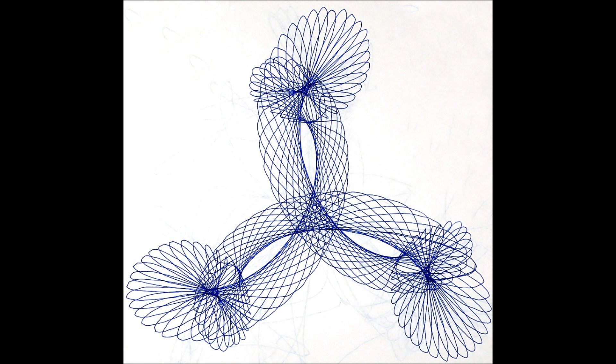The number of lobes a figure has is determined by dividing the number of teeth in the main gear by the largest common factor shared by the main gear and the drive gear. In this case, the main gear has 150 teeth, the drive gear 100 teeth. The largest common factor to both is 50. 50 divided into 150 gives three, hence three lobes.